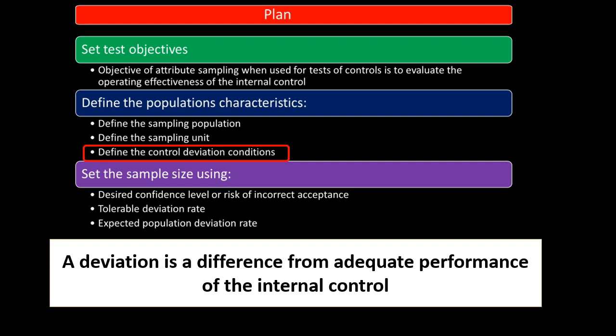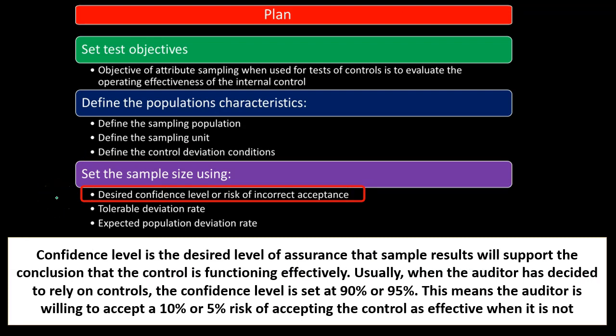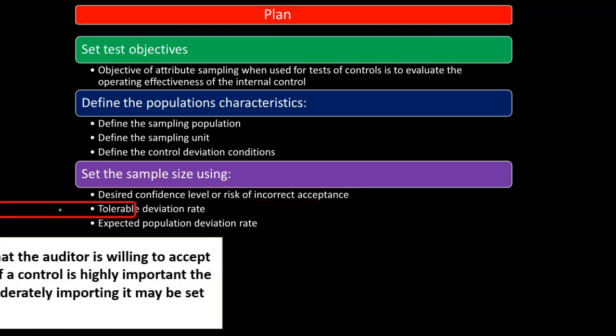Setting the sample size using the desired confidence level or risk of incorrect acceptance: the confidence level is the desired level of assurance that sample results will support the conclusion that the control is functioning effectively. Usually when the auditor has decided to rely on controls, the confidence level is set at 90% or 95%. This means the auditor is willing to accept a 10% or 5% risk of accepting a control as effective when it is not.